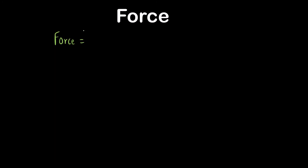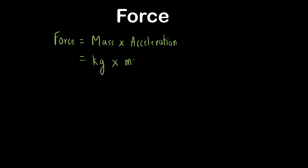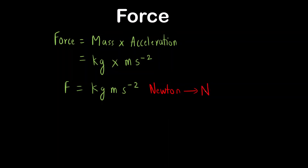Force is mass multiplied by acceleration. The SI unit of mass is kilogram and acceleration is meter per second squared, so the unit of force is kilogram meter per second squared. The SI unit of force is newton, represented by capital N. This is another very important unit to remember.